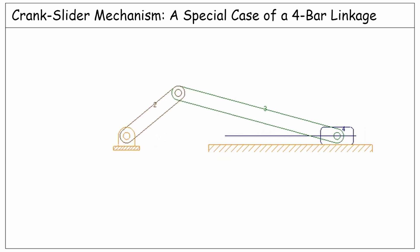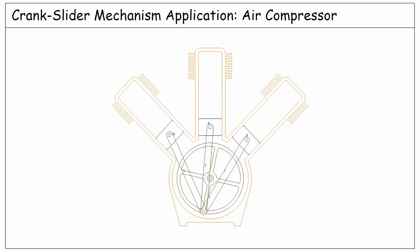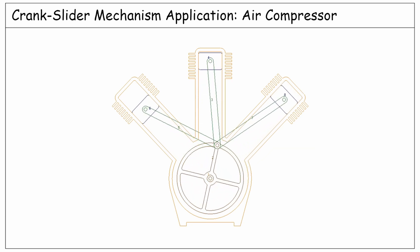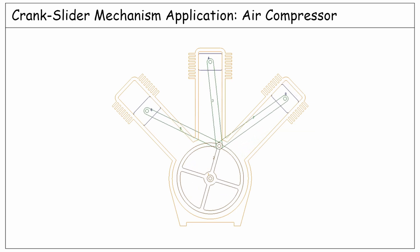Regarding the application of this mechanism, it depends on which link is the driver. If the crank drives the system, it can be used wherever we need to convert a full rotation to a reciprocating motion, such as in an air compressor, as you see here. In this example, the crank is driven by means of an electric motor.